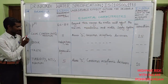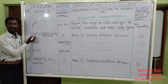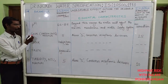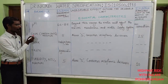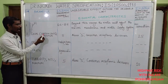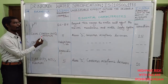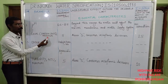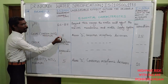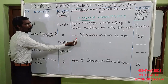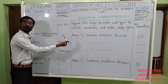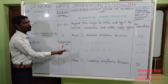The second standard is color, which is very important. We follow this standard as per Hazen unit — this is the maximum limit. The desirable limit is 5. Above 5, consumer acceptance may decrease.